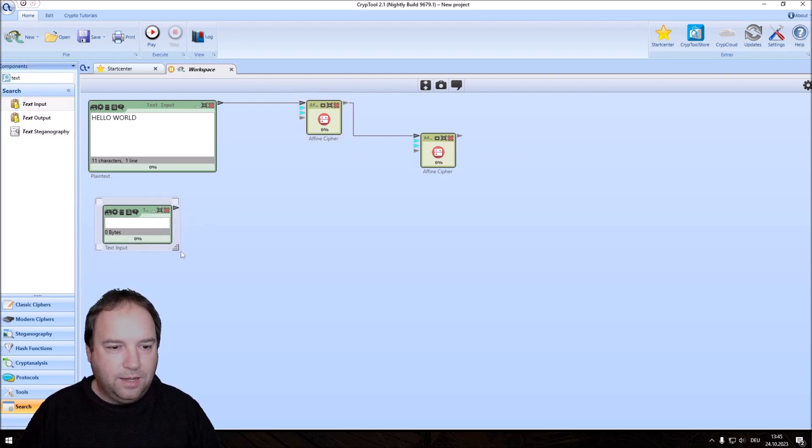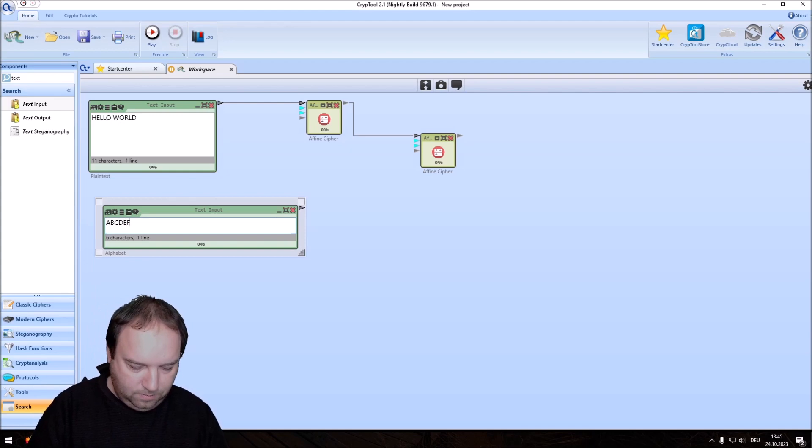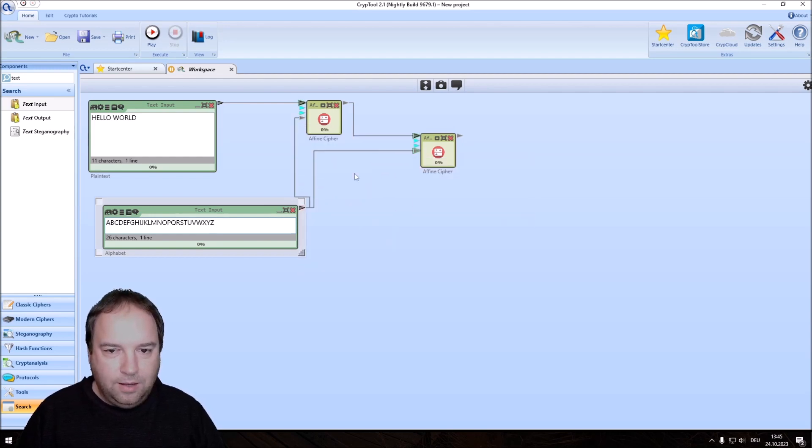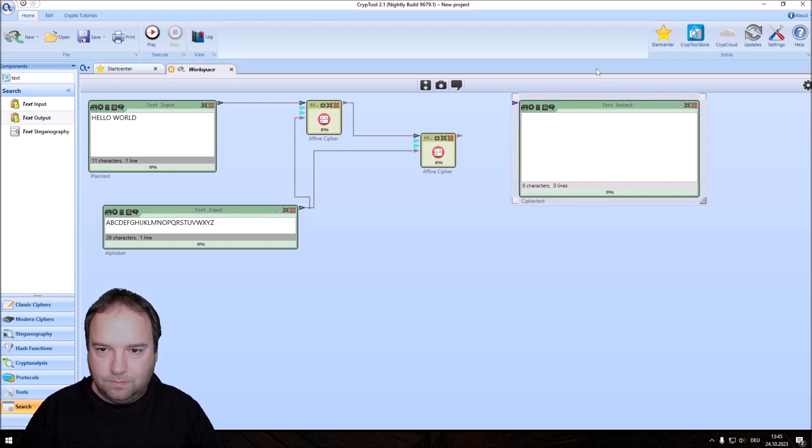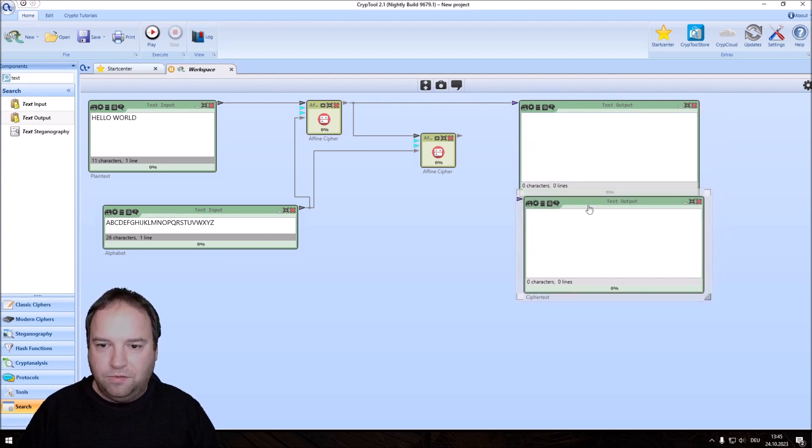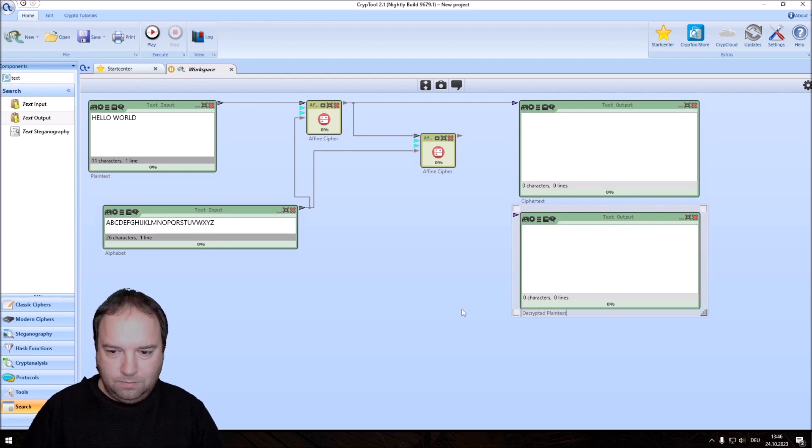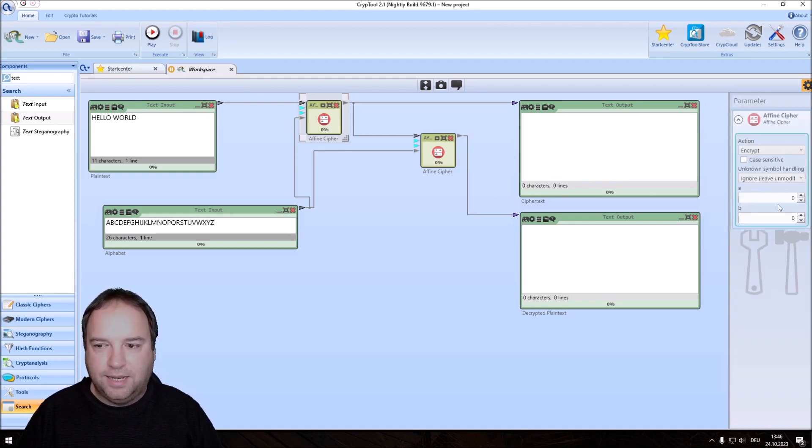Let's name this plaintext with the first component, and then this with the second component. Then I enter an alphabet. I have uppercase letters here. I enter an alphabet from A to Z. And I connect the alphabet with both components. Now I want to see the ciphertext. So I need a text output for the ciphertext here. And I just copy the component for the decrypted plaintext. To provide the keys, remember we need a for multiplication and b for addition. We can set these as a setting. We set a to 5 and b to 5, and the same in the second component.